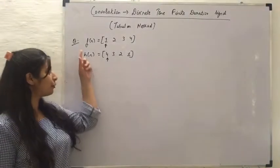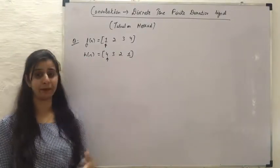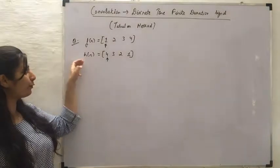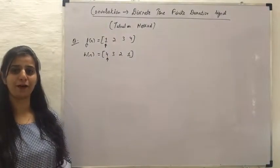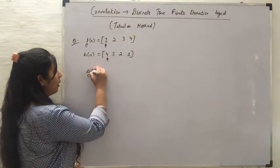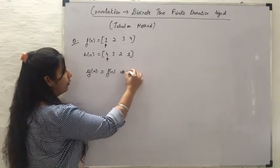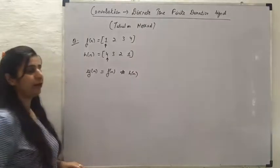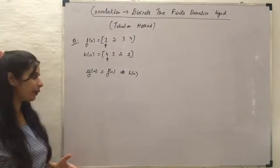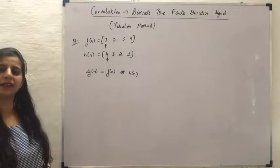Here I have two signals f of n and h of n which are finite duration, meaning they have a limited number of samples. I want to find out the convolution between f of n and h of n, which I am naming as y of n. So y of n is equal to f of n convolved with h of n. When implementing through the tabular method, I will write f of n values and h of n values in a table.